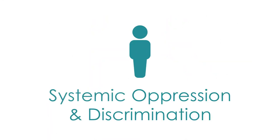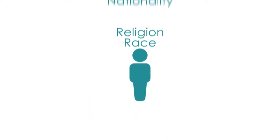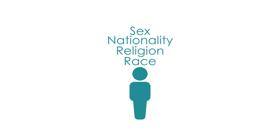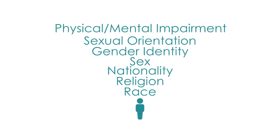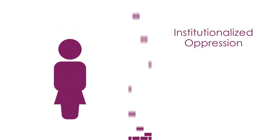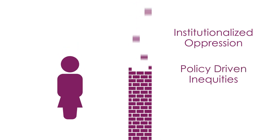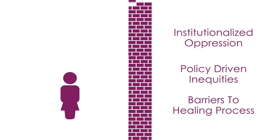Traumatic injury can also occur from systemic oppression and discrimination based on race, religion, nationality, sex, gender identity, sexual orientation, and physical or mental impairment. These forms of institutionalized oppression, resulting in policy-driven inequities, further complicate and even become barriers to the healing process.